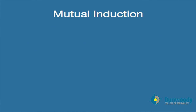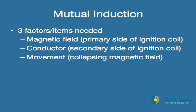The process of mutual induction requires three factors. First, we need a magnetic field, which happens on the primary side of the ignition coil. Second, we need a conductor, which is the secondary side of the ignition coil. And third, we need movement — which in this case is the collapsing of the magnetic field.